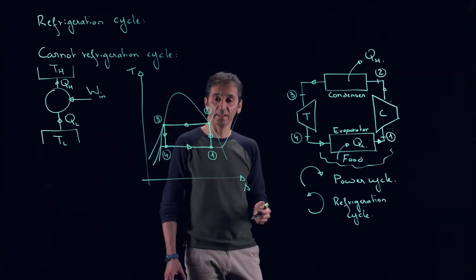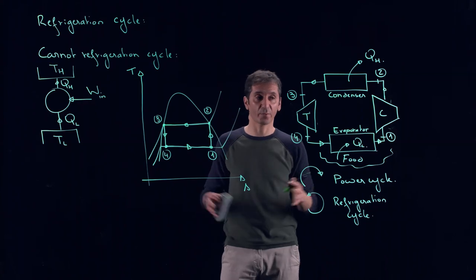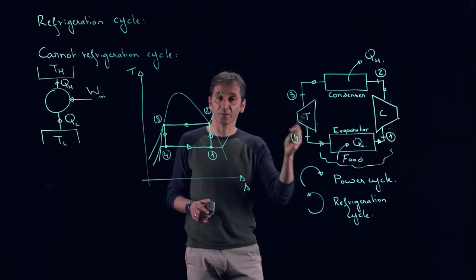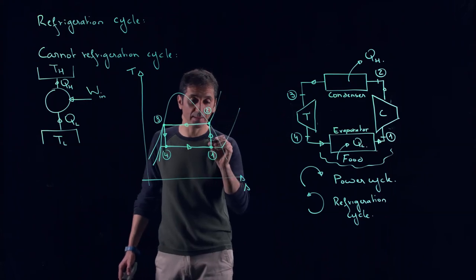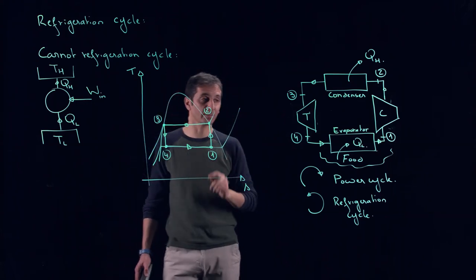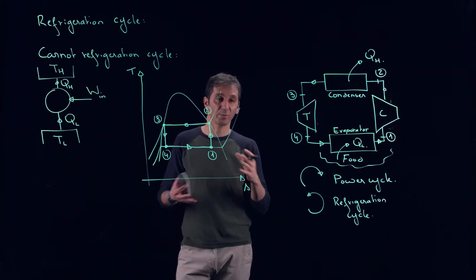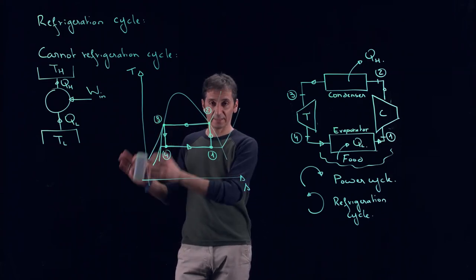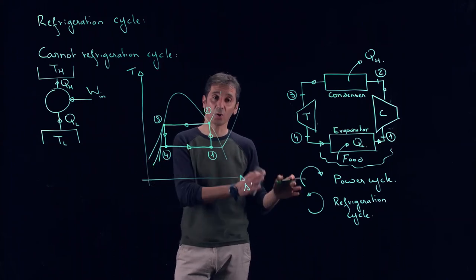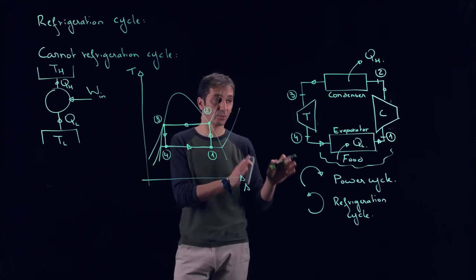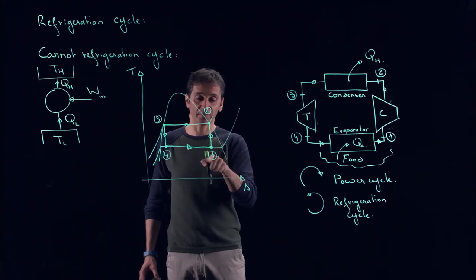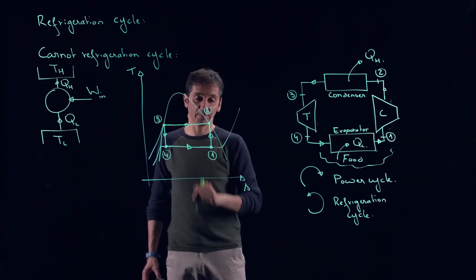The first thing we can see is that state one to state two, we are compressing, so we are using a compressor. However, this is in a mixture phase. And this is something we don't like. When we have a mixture and we try to compress, we really prefer to have liquid, so you use a pump, or a vapor, a gas, and you use a compressor.